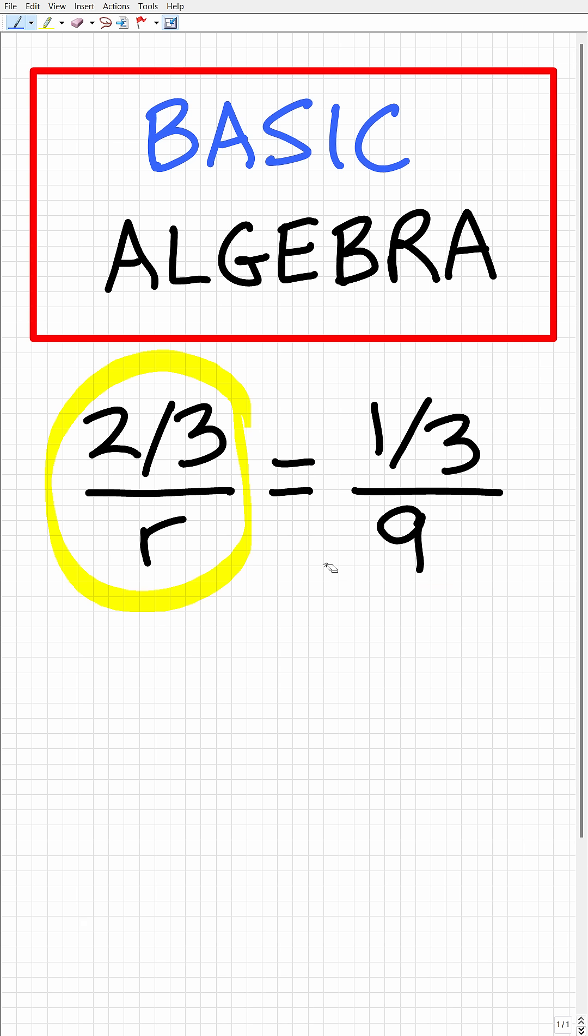So let's go ahead and use the cross product to solve for r. So that's going to be r times one-third, so we want to write that this way. One-third times r is going to be equal to 9 times two-thirds, or two-thirds times 9.